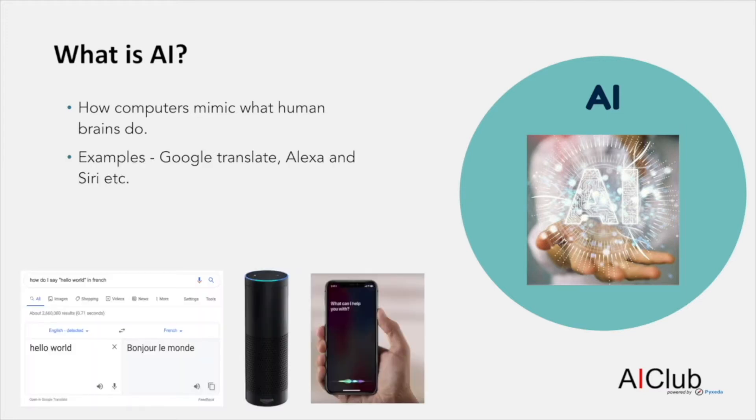Let's look at some examples that you have perhaps used in your daily life, like Google Translate, Google Search, Siri, Alexa, Google Home, self-driving cars, etc. All of these are great success stories of how AI has been able to do really sophisticated things.